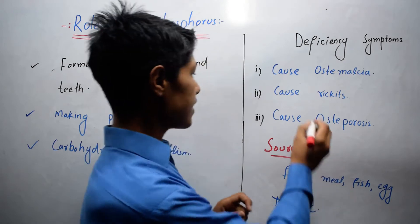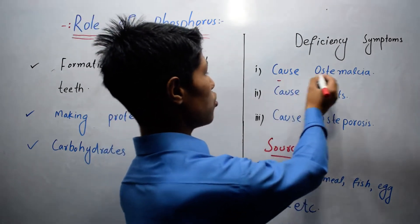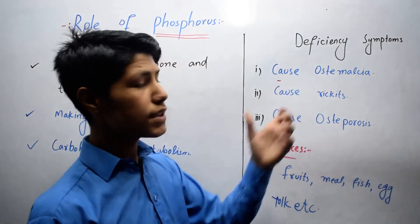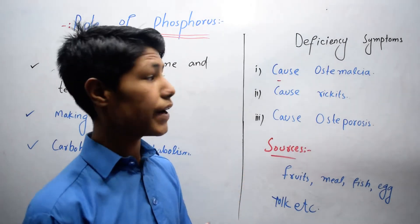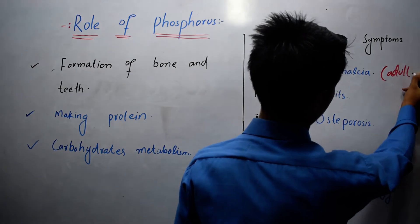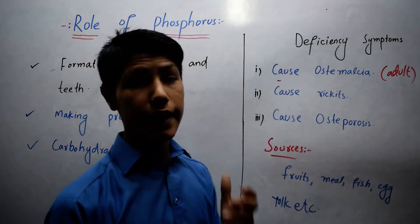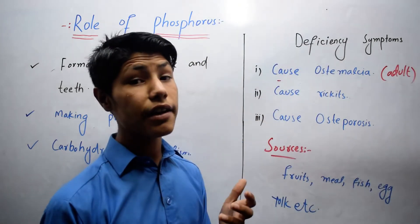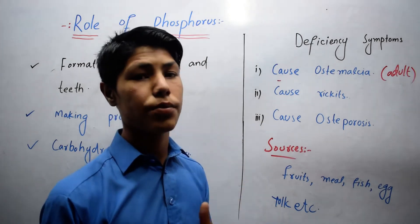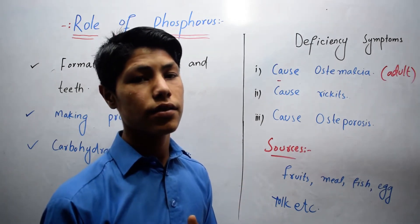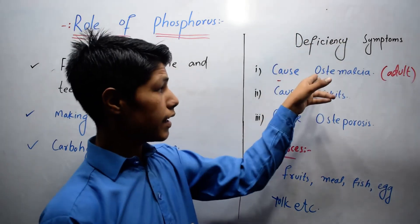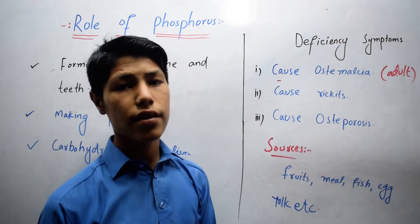The first deficiency symptom is it causes osteomalacia. It is a disease which basically occurs in adults, and it is a condition in which bones and teeth become soft. Due to deficiency of phosphorus, this disease can occur.